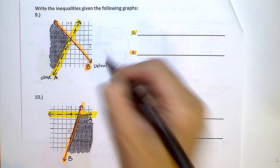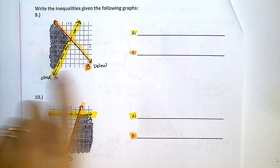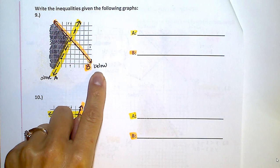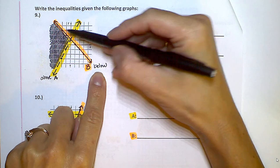So that's going to tell me A is going to be greater than. And B, since it's below, is going to be less than or equal to because it's a solid line.